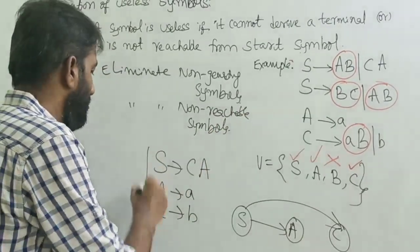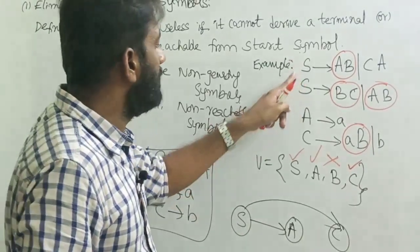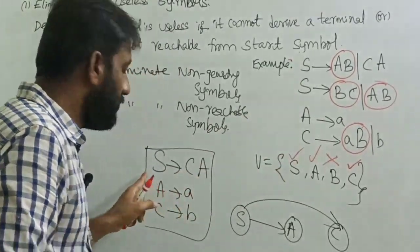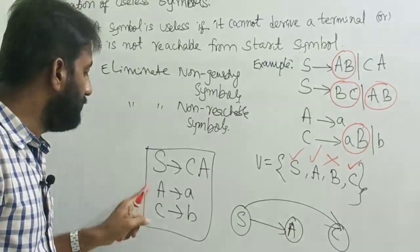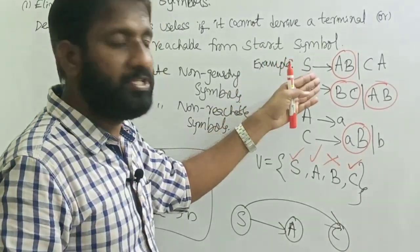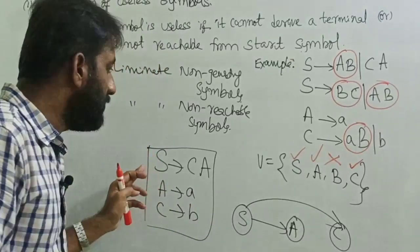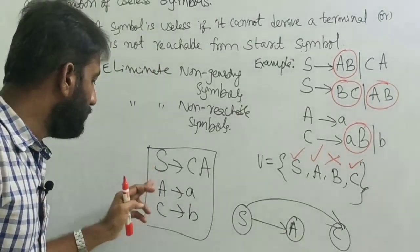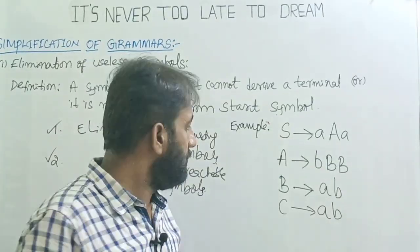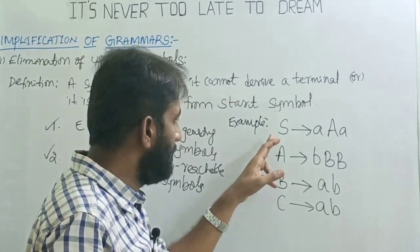After eliminating useless variables, the final grammar has 3 productions and 3 variables. Let's take one more example. The given grammar is: S → aAa, A → bBB, B → ab, C → ab. The question is to eliminate the useless symbols from this grammar.